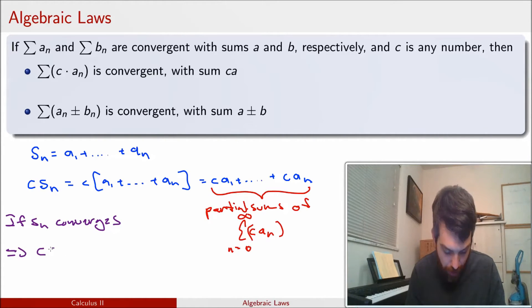this is going to imply that multiplication by a constant for sequences is also going to converge. And in particular, if the Sₙ converges to a value of a, then the cSₙ is going to converge to c times a,